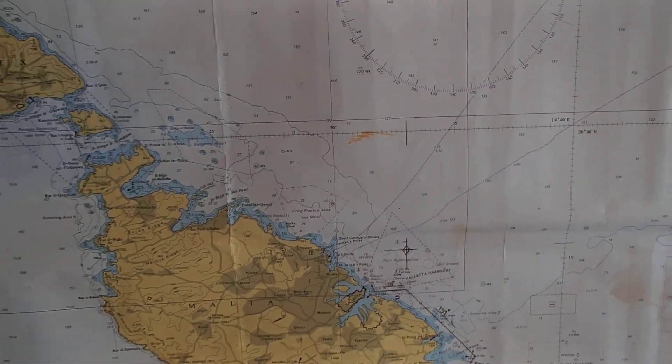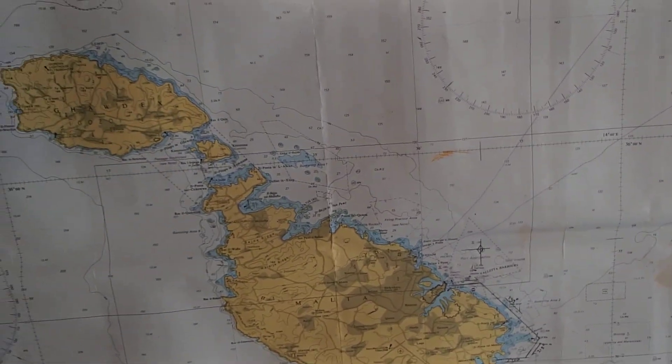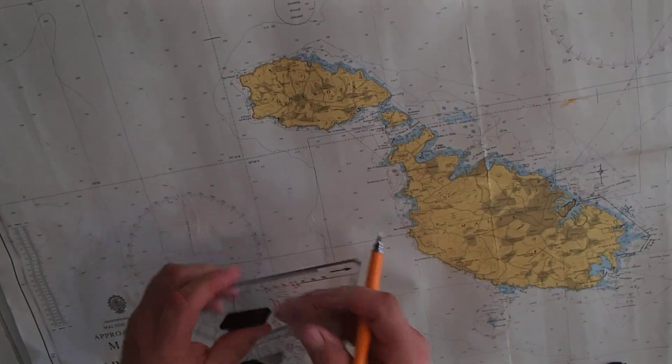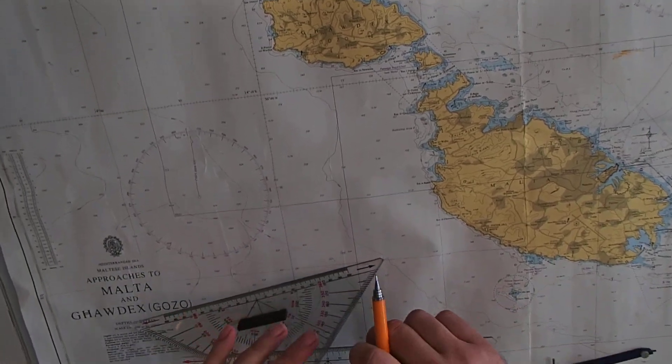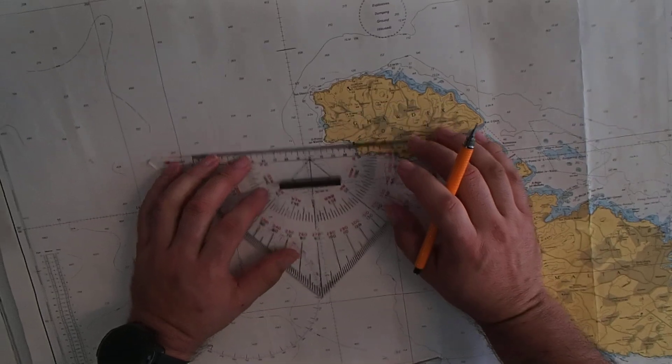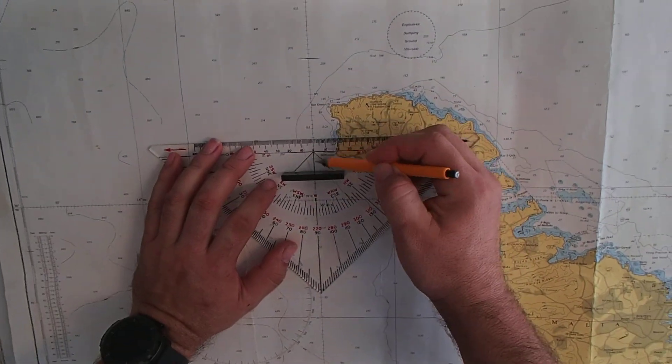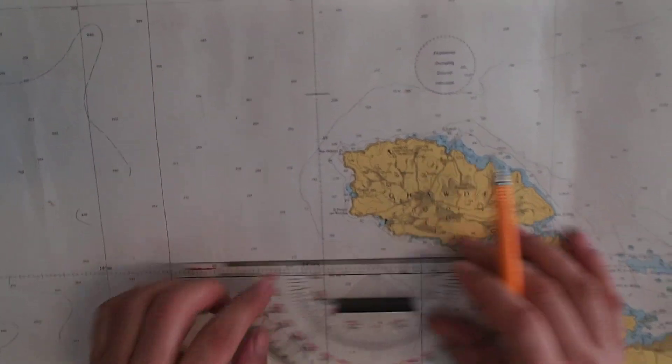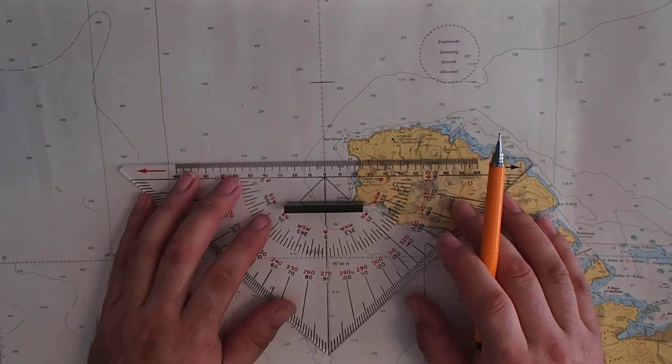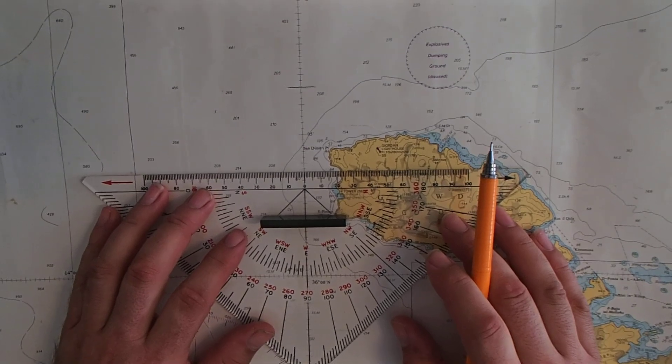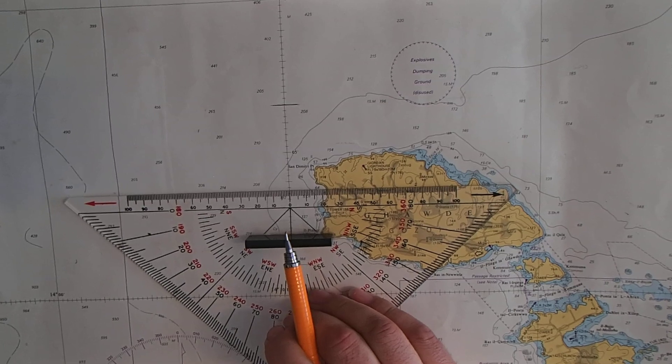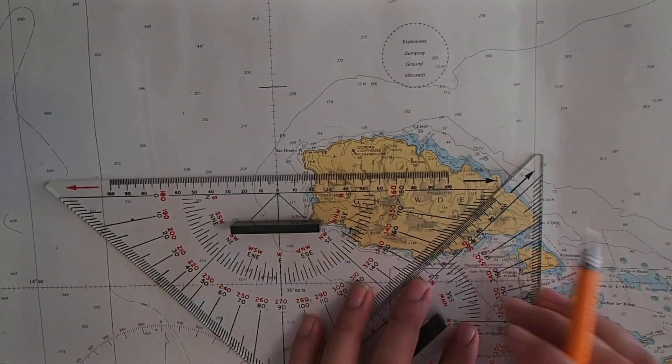For our second position we'll be using the navigational triangles so we have an idea of how to use both. Our same position is 36 06.6, so we have the center of the triangle on top of the longitudinal line and we need 05 06.6 so we need to go this way.